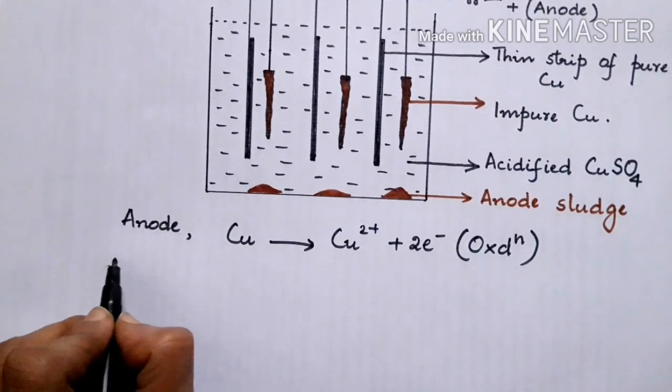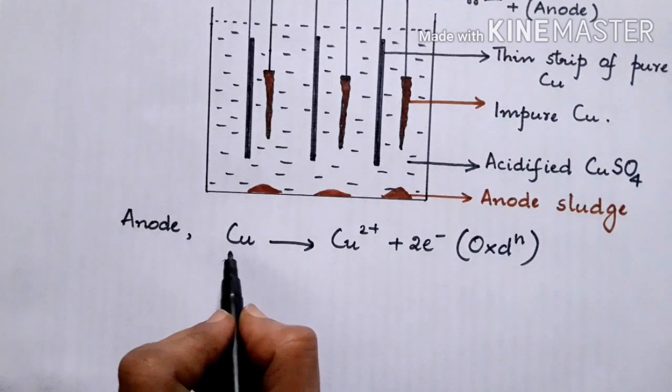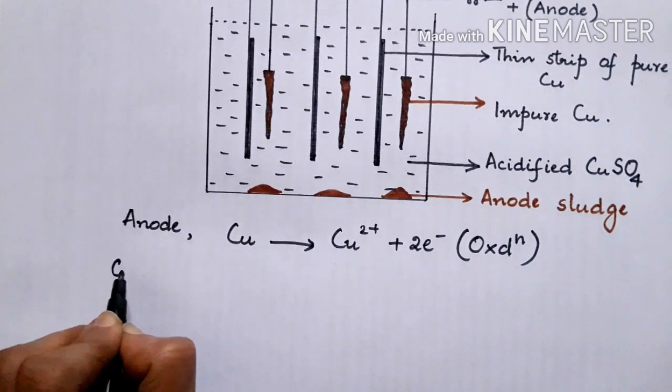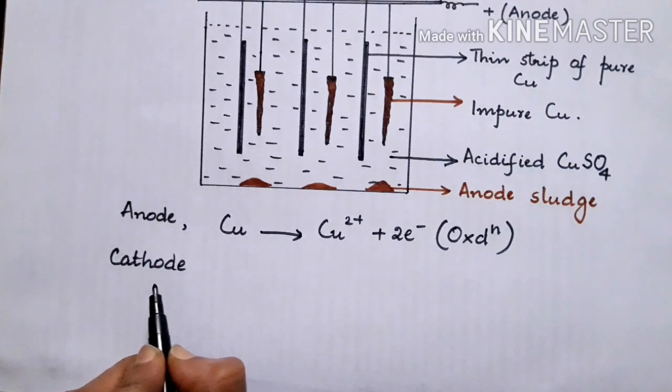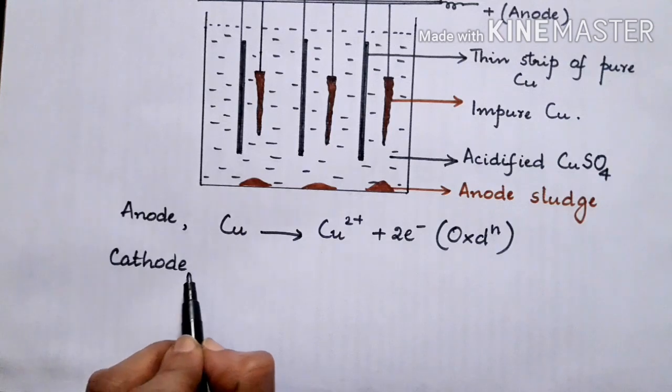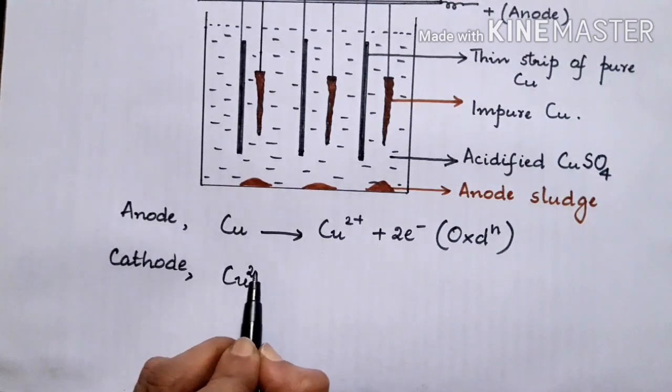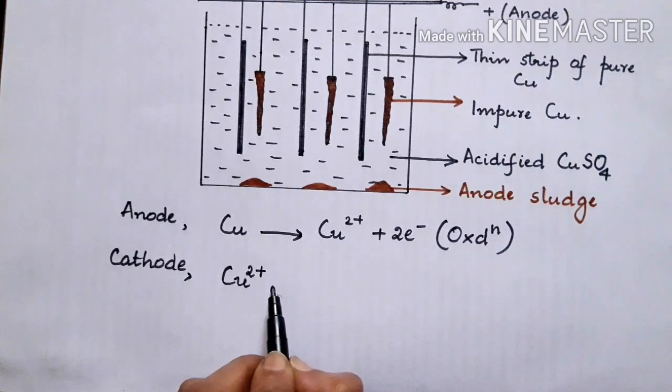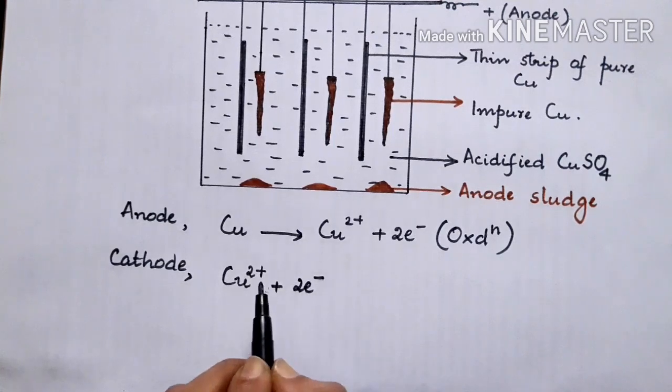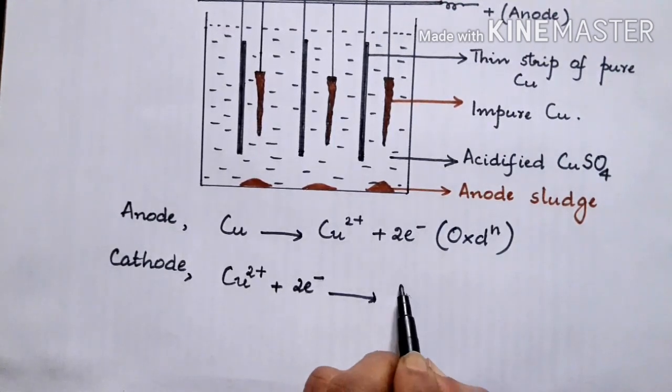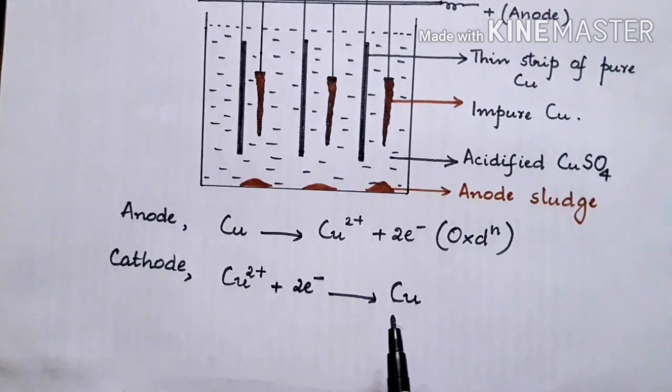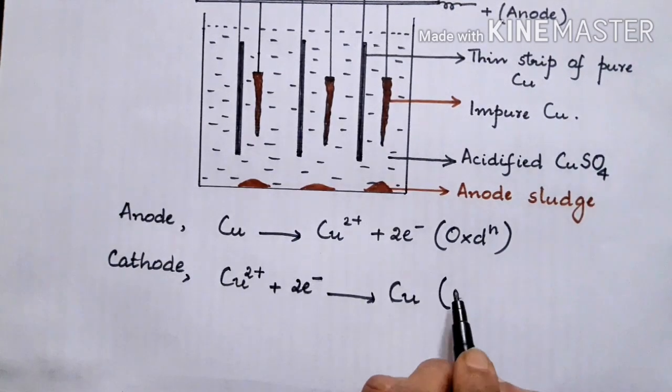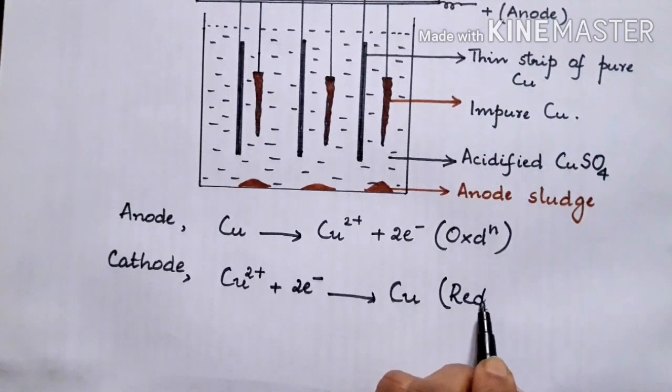Simultaneously, we find that whatever substances are gone into the solution, you find that that much of substance reaches the cathode. You find that Cu2+ ions migrate towards the cathode and it will receive two electrons from there and it forms Cu. That is, it gets deposited as copper at the cathode. So this is the reduction part of the reaction.